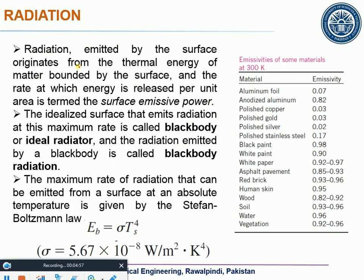I will talk about different parameters related to radiation. There are generally three parameters: how the body absorbs radiation, how the body emits radiation, and how the body transmits radiation. These are three kinds of interaction between waves incident on the surface of a body — either the body emits the radiation, absorbs it, or transmits it.